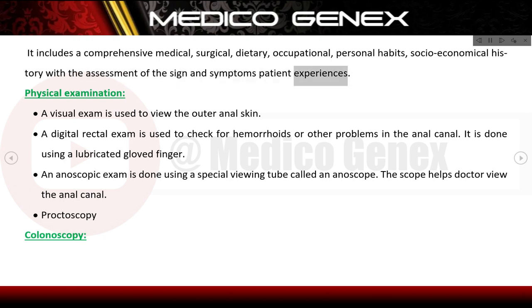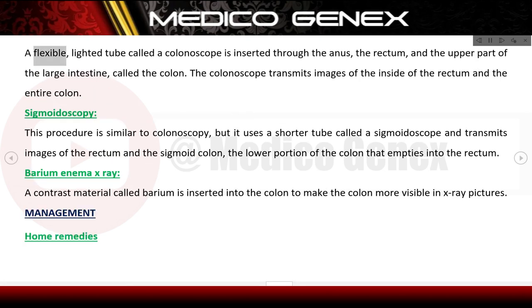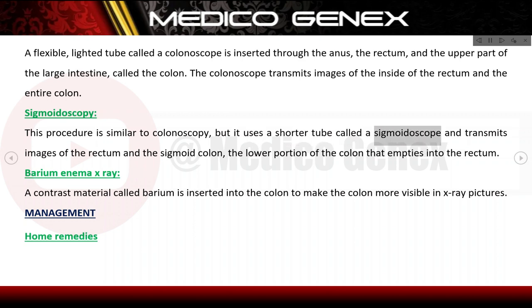Physical examination includes a visual exam to view the outer anal skin and a digital rectal exam using a lubricated gloved finger to check for haemorrhoids or other problems in the anal canal. An anoscopic exam uses a special viewing tube called an anoscope to help the doctor view the anal canal. Proctoscopy and colonoscopy use a flexible lighted tube called a colonoscope inserted through the anus, rectum, and upper part of the large intestine to transmit images of the inside.